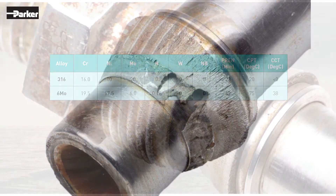The increased nitrogen content, or N, improves the mechanical strength of the material, as well as the pitting and crevice corrosion resistance. Additionally, the copper traces, only present in 6MO, increase the resistance to some acid attack.